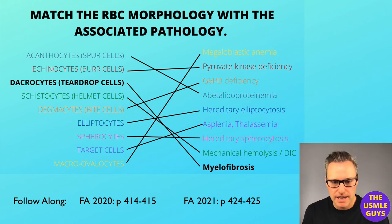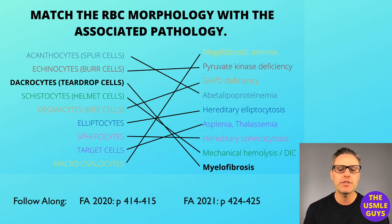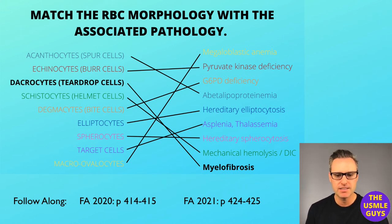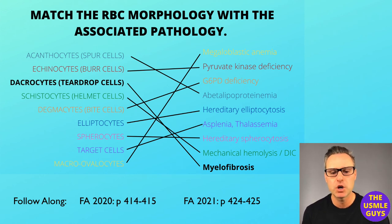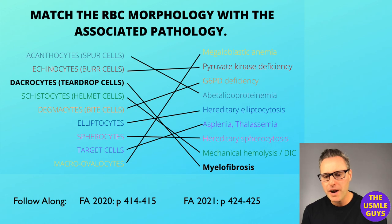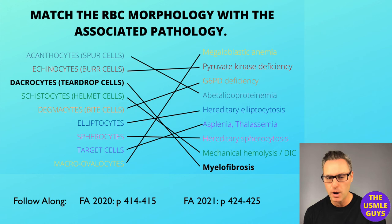Next, we have the bite cell, or degmacyte — these are seen in glucose-6-phosphate dehydrogenase deficiencies, and are the consequence of the removal of Heinz bodies by splenic macrophages. Elliptocytes are easy to remember because they are seen in hereditary elliptocytosis — the name is in the disorder. This morphology is the result of a mutation in the genes that encode the RBC membrane proteins. Then we have spherocytes, associated with hereditary spherocytosis but also autoimmune hemolytic anemia — in a vignette they'd be described as small spherical cells without central pallor.